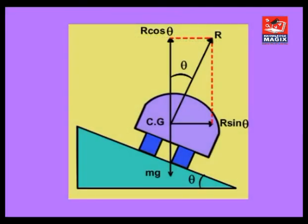Now, expression for the angle of banking. Consider a vehicle of mass m moving towards right along a curved road of radius r and banked at an angle θ.